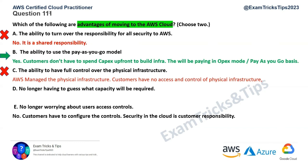Option D: no longer having to guess what capacity will be required. This is correct, coming from the scalability aspect of cloud, where you don't have to over-provision or under-provision. With fluctuating demand, you can configure auto-scaling of services, and the resources will scale up or down depending on the requirement.